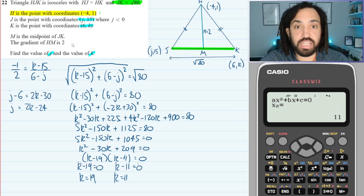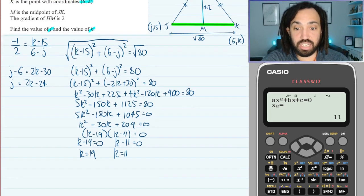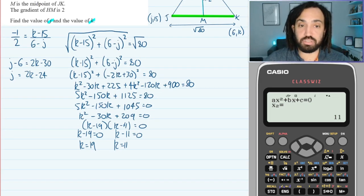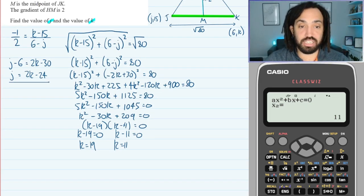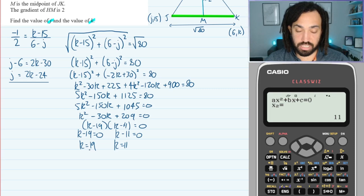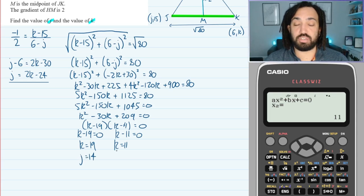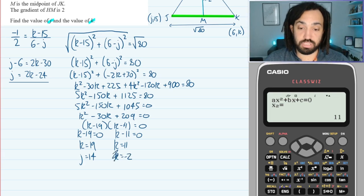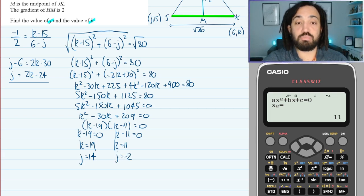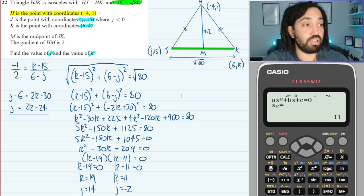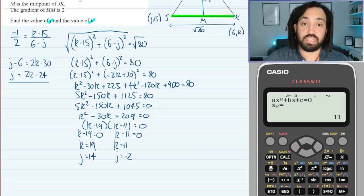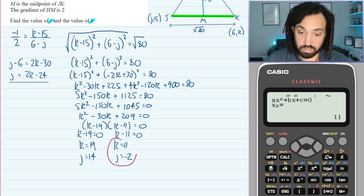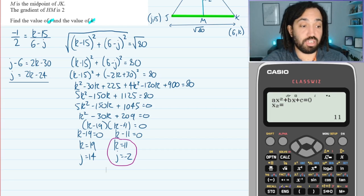Now let's find J. Like with quadratic simultaneous equations, we substitute back into the linear equation J equals 2K minus 24. For K equals 19: J equals 38 minus 24, so J equals 14. For K equals 11: J equals 22 minus 24, so J equals minus 2. Now which one is which? It does say here that J is less than 0, so it must be J equals minus 2. And if you liked that and want to do more grade 9 questions on Sunday, the link is in the description for the live session.